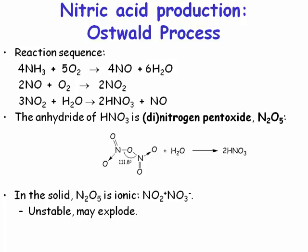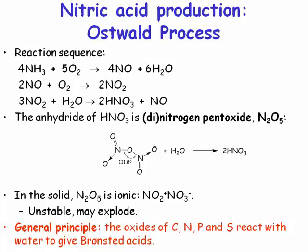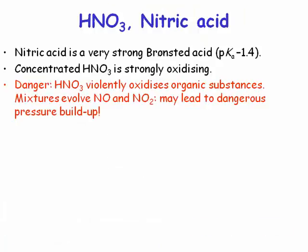So don't ever try dehydrating. All of these hydrating and anhydride examples illustrate a general principle: if you have a metal or non-metal oxide and you hydrate it, you form a Brønsted acid. Nitric acid is a very strong Brønsted acid with a pKa of -1.4, which we'll discuss more later in the course.